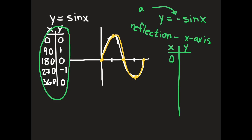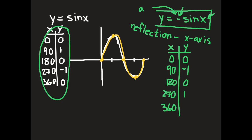If I plug in 0, 90, 180, 270, and 360: plugging in 0 gives y equals 0; plugging in 90, sine of 90 is 1, but there's a negative out in front, so it's negative 1; plugging in 180 gives 0; plugging in 270 gives positive 1; and negative sine of 360 is also 0.